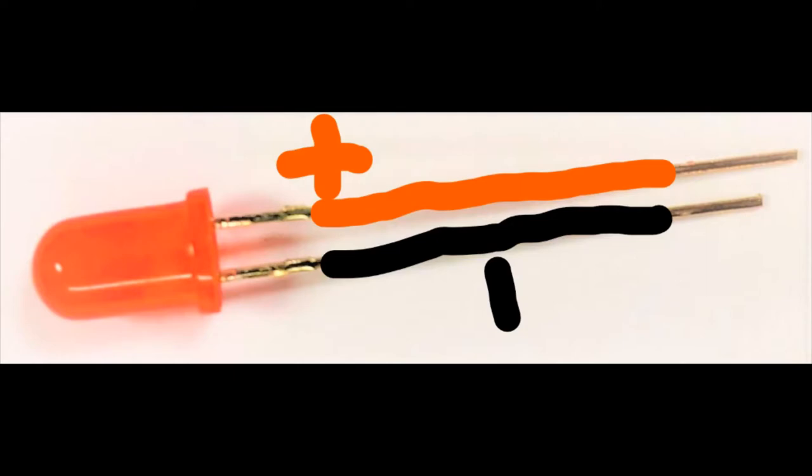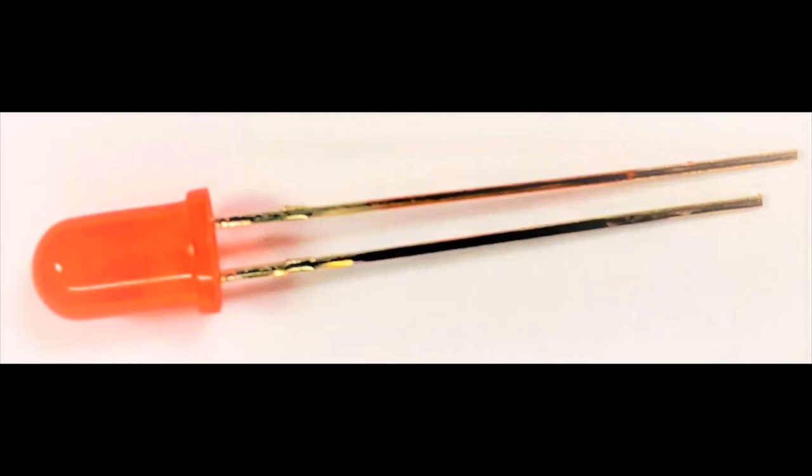So when you're done you'll have an LED that has a marked long red anode and a short black cathode and it'll be easier visually to see how to wire it up.